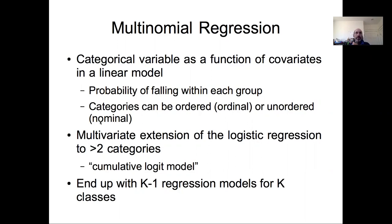A common example of a multinomial regression model might be a classification model, such as a remote sensing model to classify remotely sensed imagery into different land cover classes. The multinomial model is really extending the logistic regression into the multivariate case where we have multiple categories. Specifically, we're going to focus on one variant of multinomial regression called the cumulative logit model.